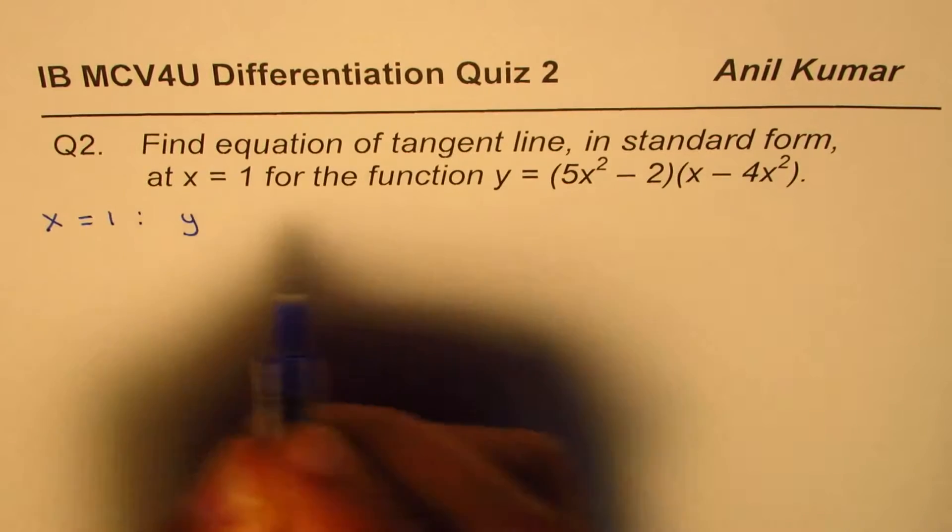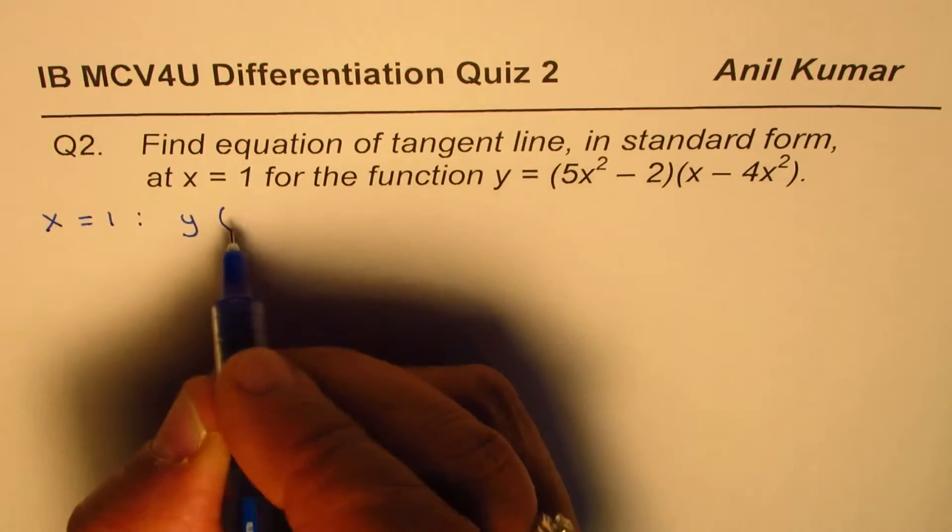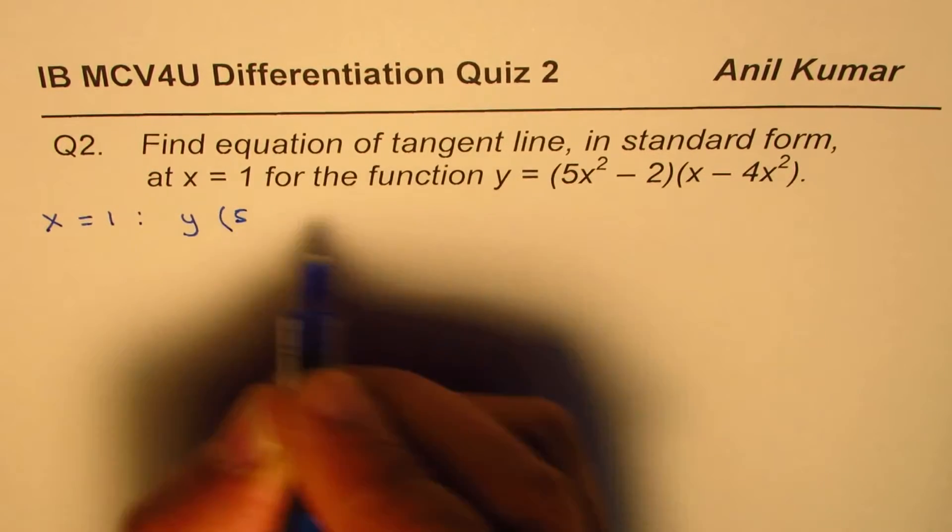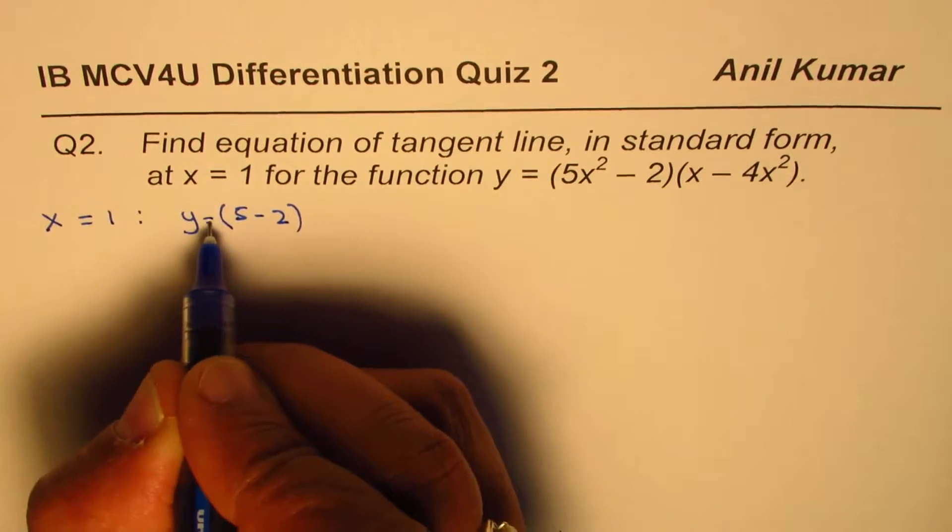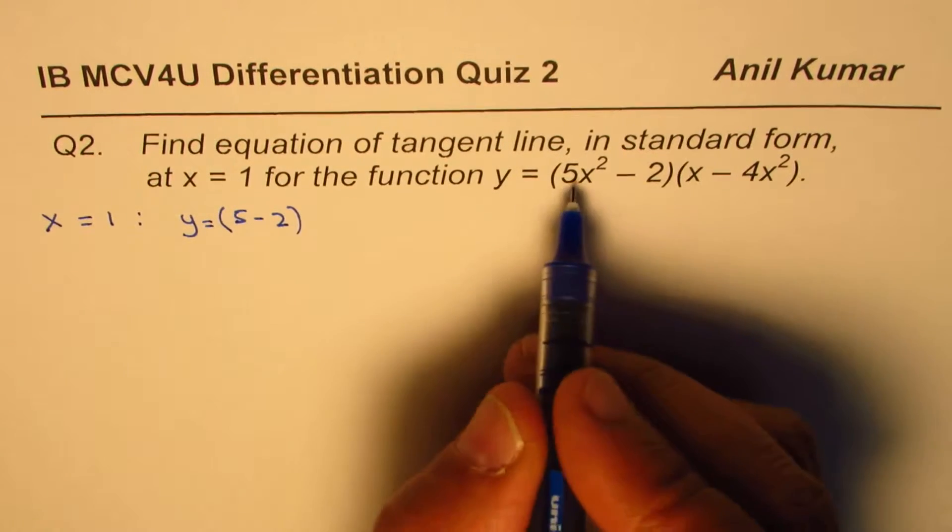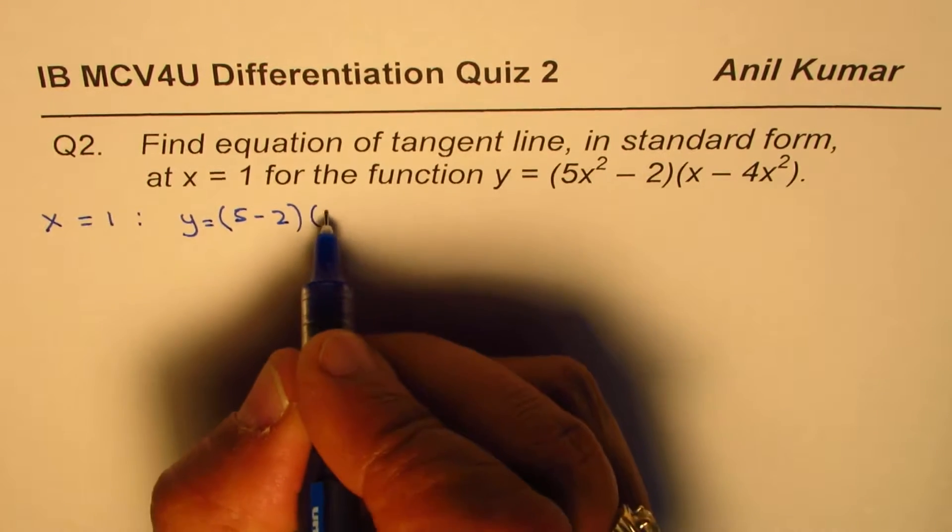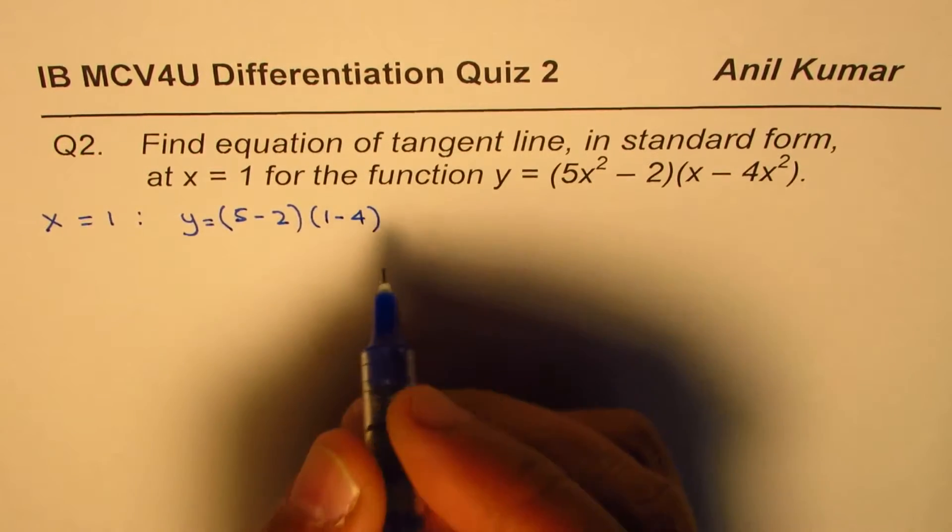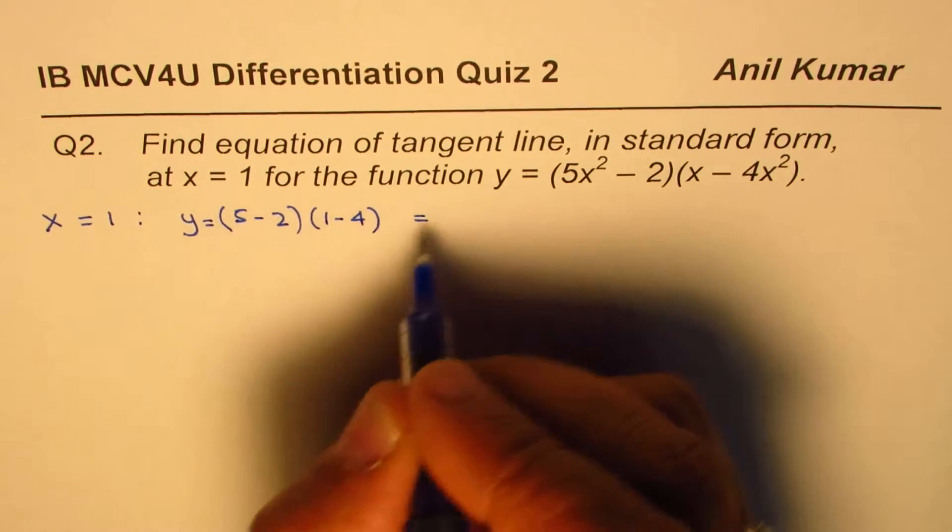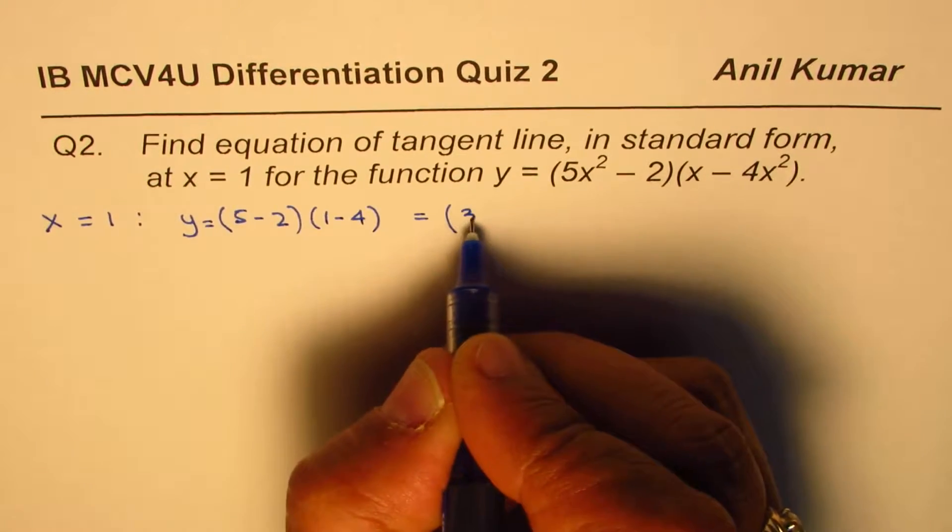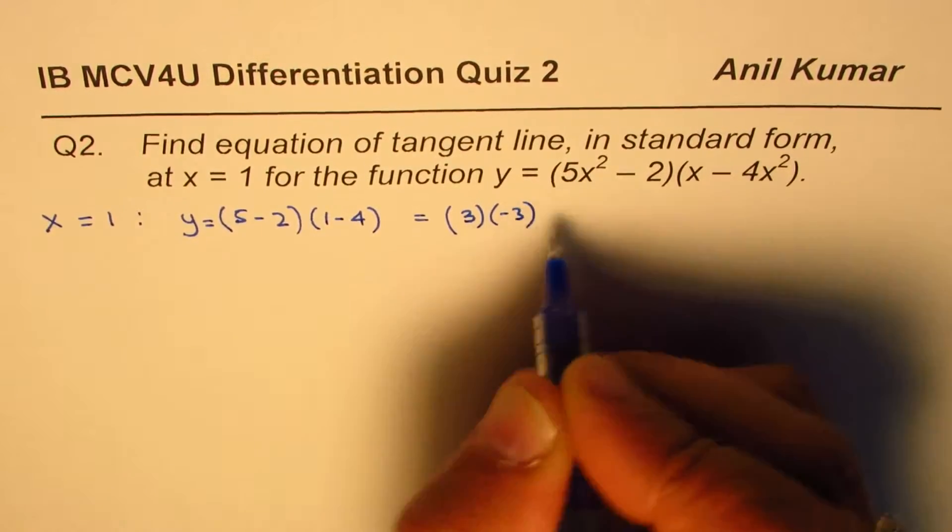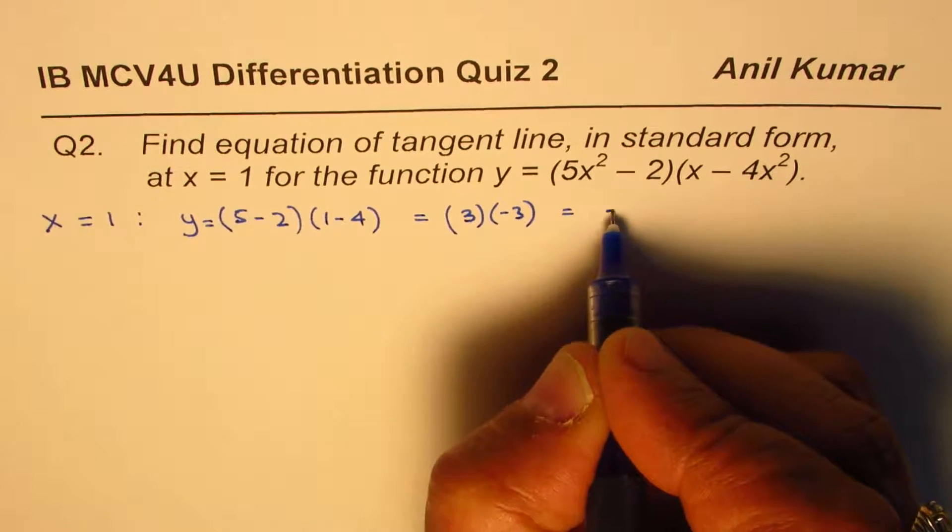Let's substitute 1 for x. We get 5 minus 2. We are substituting 1 for x. y equals 5x squared. Substitute 1, we get 1 minus 2 times 1 minus 4. And this value is 5 minus 2 is 3, and we have minus 3, and that gives you minus 9.